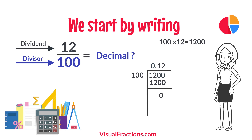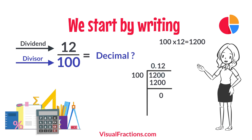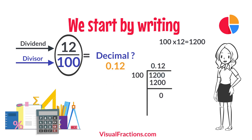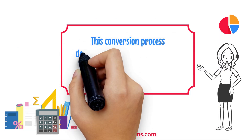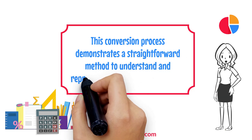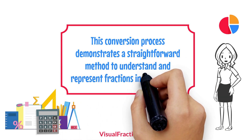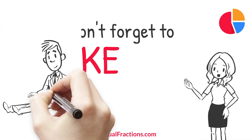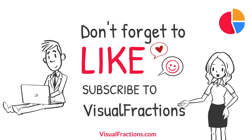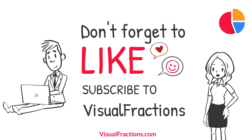So, there we have it. The fraction 12 one hundredths converted to a decimal is 0.12. This conversion process demonstrates a straightforward method to understand and represent fractions in decimal form. If you found this tutorial helpful, make sure to hit the like button and don't forget to subscribe to Visual Fractions. Thanks for watching.